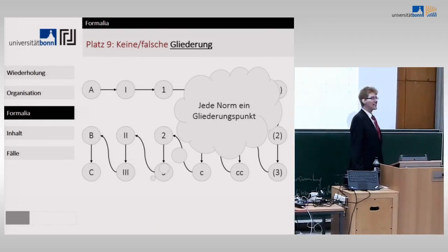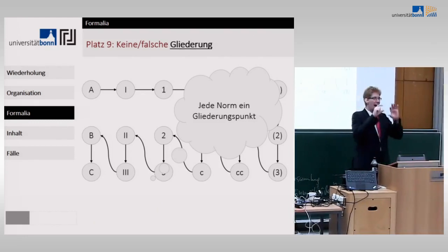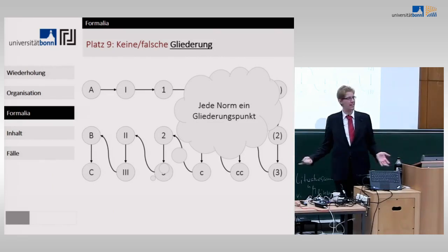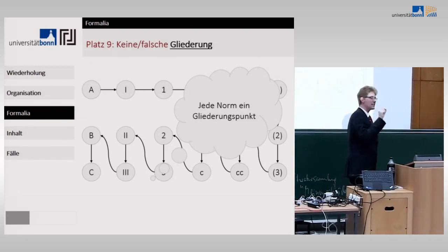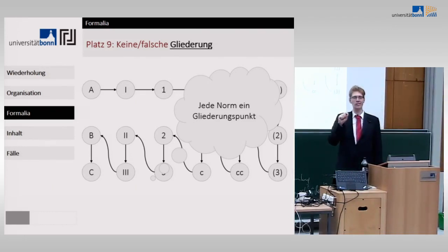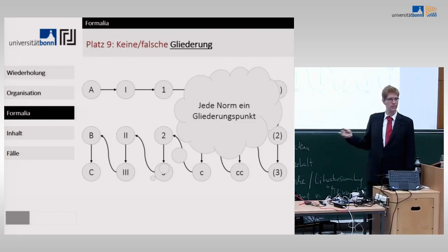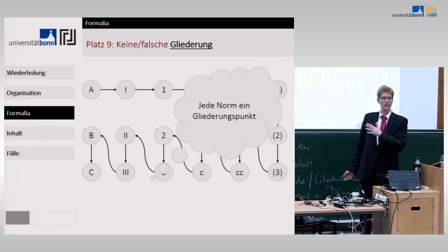Überschriften bringen keinen Erkenntnisgewinn. Schreiben Sie nicht 'Römisch I – Anspruch entstanden', sondern direkt: 'Römisch I. A müsste ein Anspruch gegen B entstanden sein. Dies ist der Fall, wenn ein wirksamer Kaufvertrag besteht, § 433.' Lassen Sie auch einzelne Wort-Überschriften wie 'Schuldverhältnis', 'Pflichtverletzung', 'Schaden' weg und formulieren Sie direkt den Prüfungssatz.